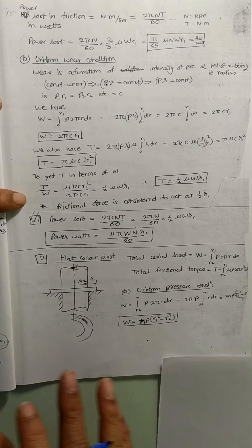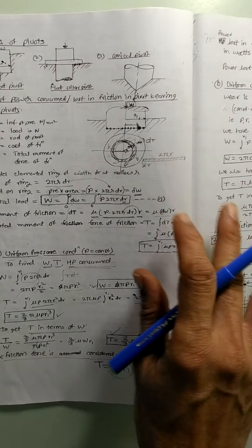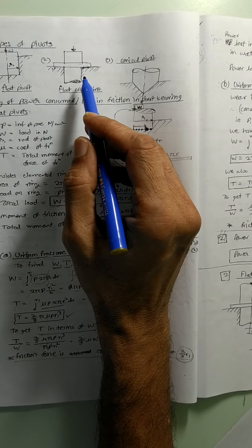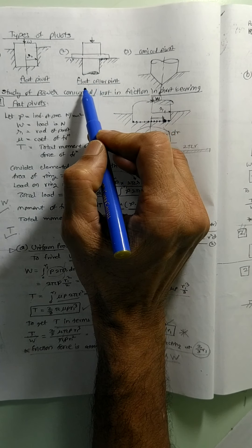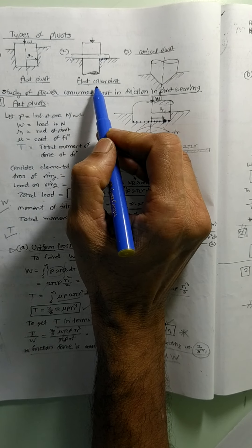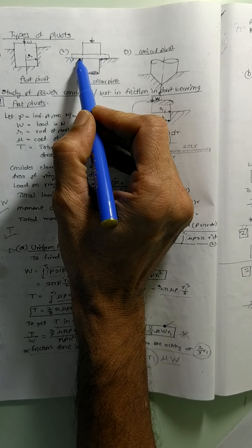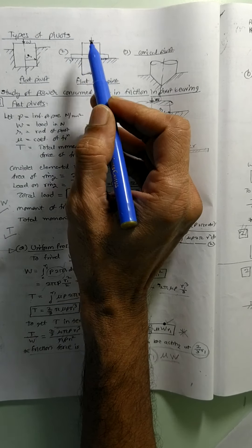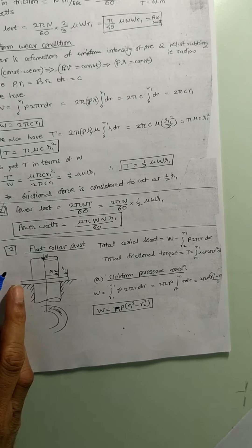Now let us take the second case. We have already earlier seen that there are three types of pivots we are going to study. Out of that, this middle one is the flat collar pivot. So here the contact surface is like a ring. So this second case we will now talk about.